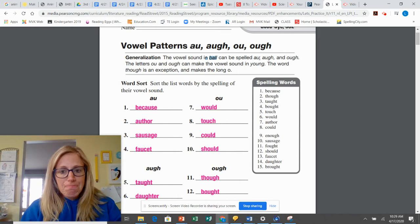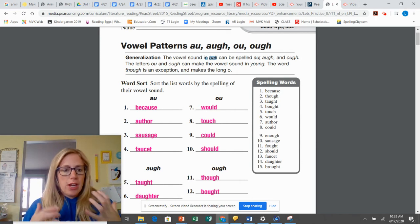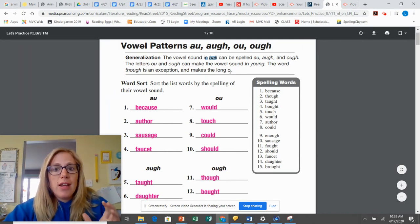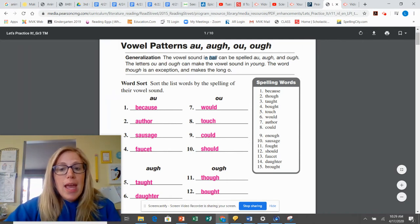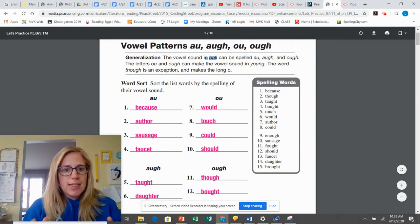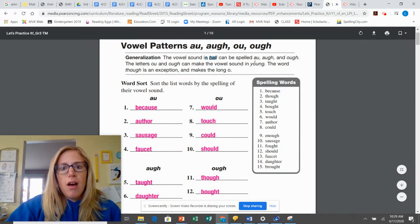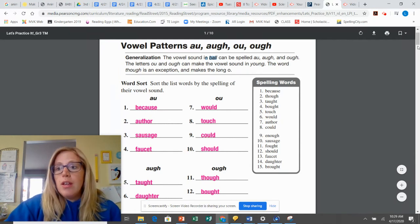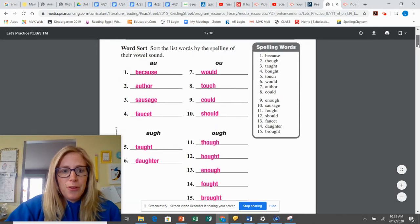So this is when we talk about in foundations using those spelling options. We know we can either make that aw sound using AU, AUGH, or OUGH. So we have to write it down and see which one looks right. And then the uh sound, we can make it with OU or OUGH. There's lots of different ways too, but for our spelling this week, this is what we're doing.